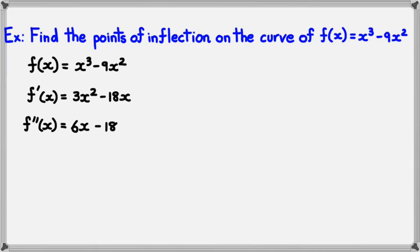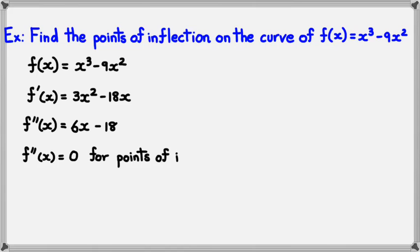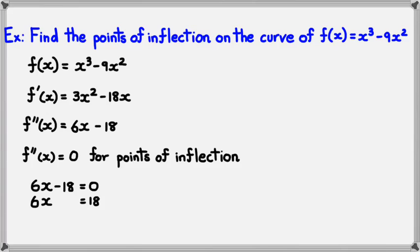Now, because we want to find the point of inflection on this curve, we know that f''(x) is equal to 0, because that's one of the conditions of points of inflection. So with that in mind, 6x − 18 = 0. Rearranging, we get x = 3.